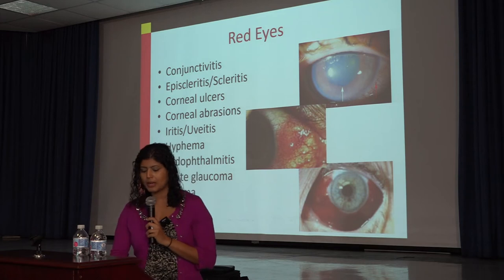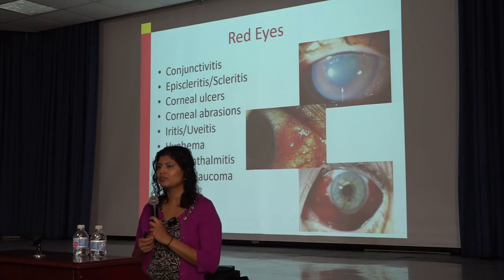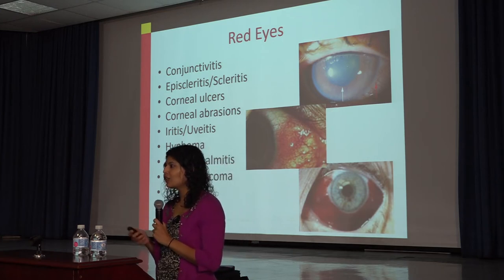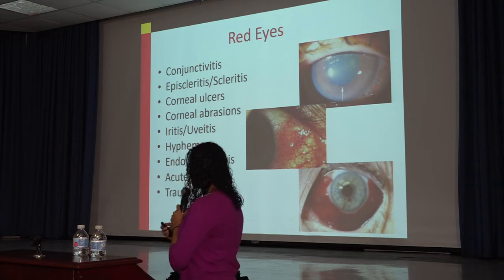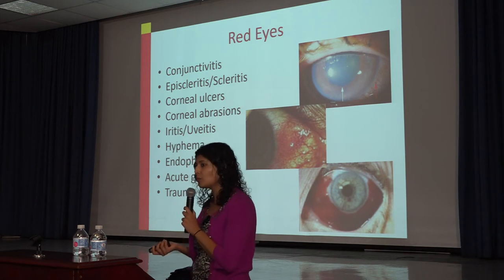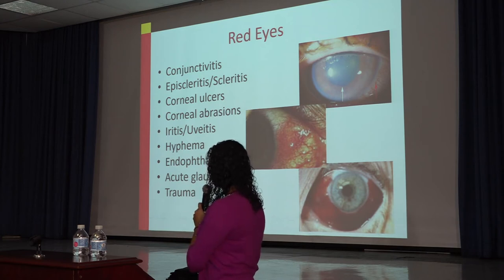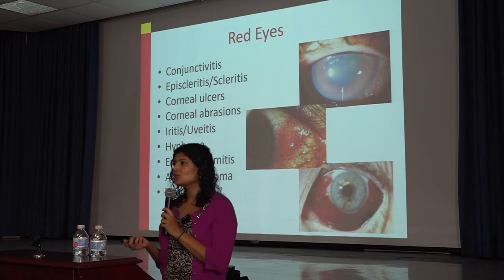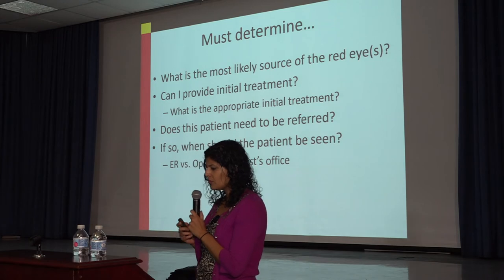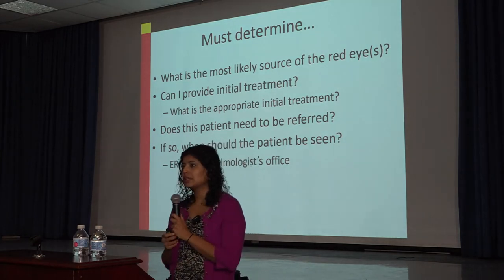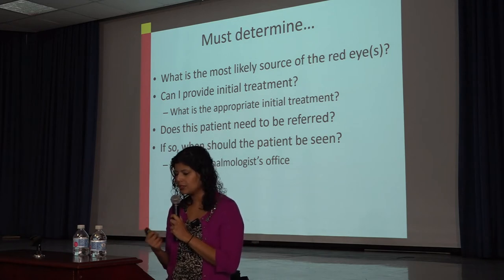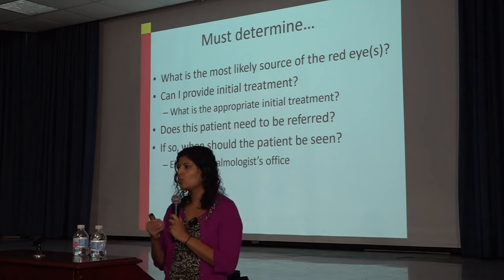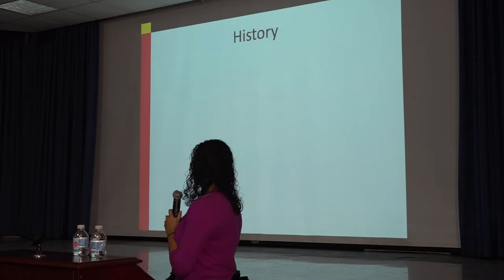Let's talk about common eye conditions you might see in general, internist, or family medicine practice. The most common is red eye — someone calls saying their eye is red. Red eye can mean a wide range of things, from benign conjunctivitis all the way to acute glaucoma, endophthalmitis, or severe trauma. You need to determine the most likely source, whether you can provide initial treatment, what that treatment is, and whether and how urgently to refer.